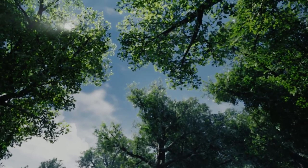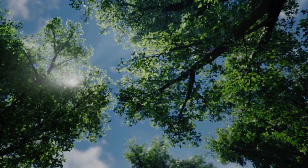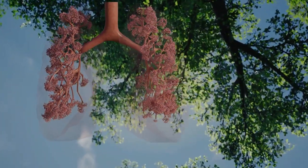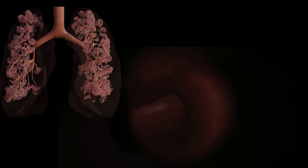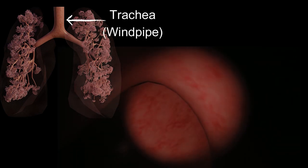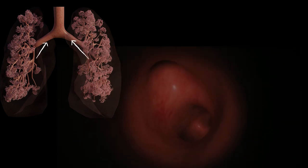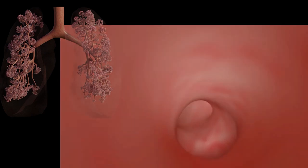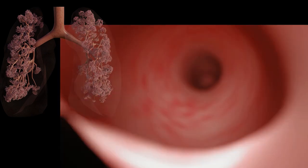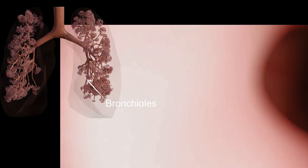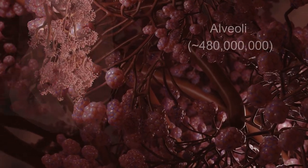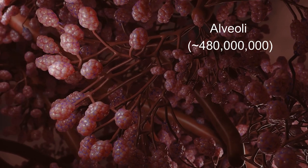Then it enters the lower respiratory tract, the area below the Adam's apple. Imagine an upside down oak tree, the bronchial tree, where each bronchus or branch is a tube that the air travels through. Firstly, down the trachea, the windpipe, then it divides into two large main bronchi, left bronchus and right bronchus, which lead into each of the two lungs. These branches or bronchi divide and divide and divide about 23 times into the narrowest branches called bronchioles before they reach approximately 480 million alveoli, the microscopic air sacs in our lungs.